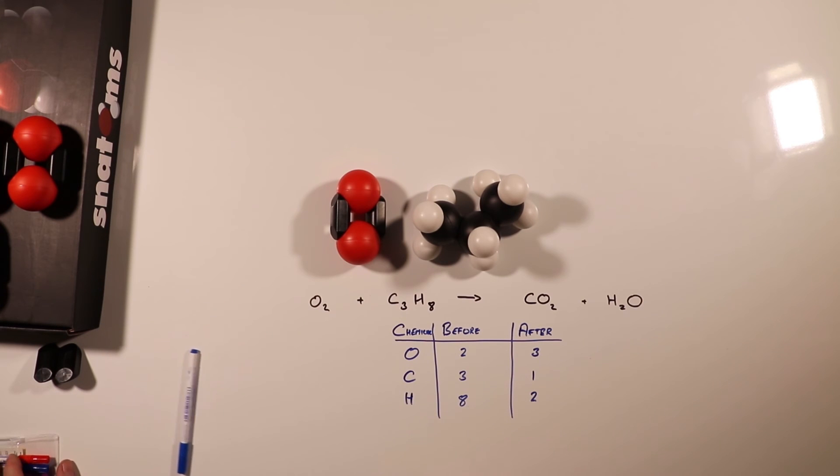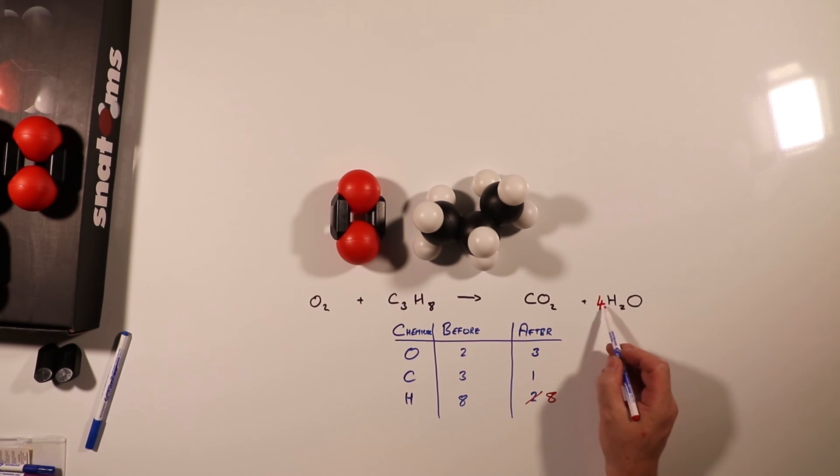Where do we start? Well, if we've got eight hydrogens on this side, then we must have eight hydrogens on the other side. Two times something makes eight. Two fours are eight. If I've got four times two, eight hydrogens, I must have four oxygens.